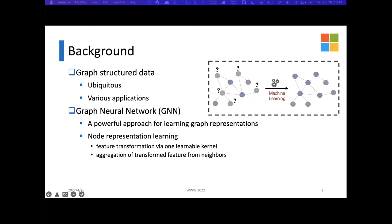As a powerful approach for learning graph representations, graph neural networks such as GCN, GraphSage, and GAT are widely used in applications of graph data. The process of node representation learning can be roughly summarized as two steps: first, feature transformations via one learnable kernel; second, aggregations of transformed features from neighbors. The learned node representations can be fed to downstream neural networks for specific learning tasks such as node classification, link prediction, and community detection.